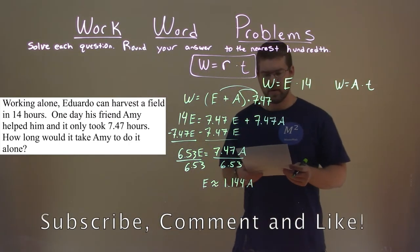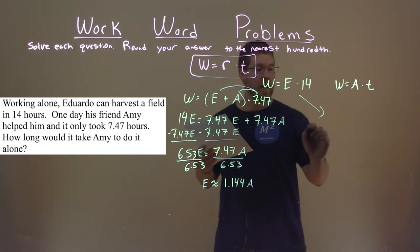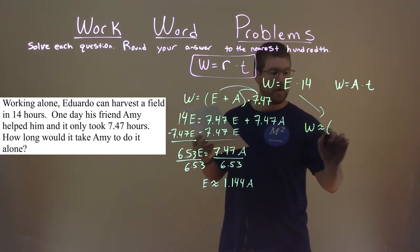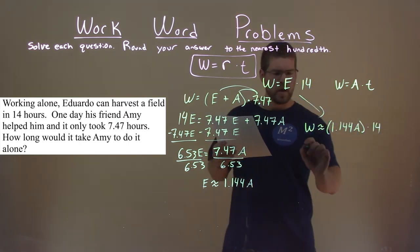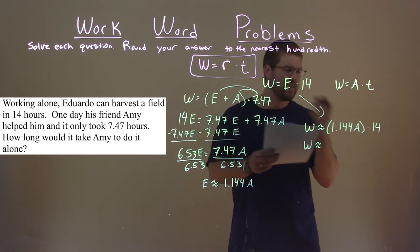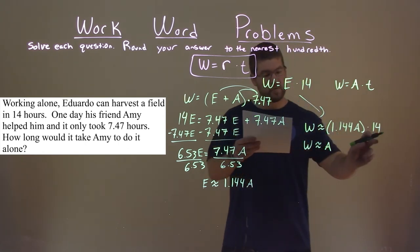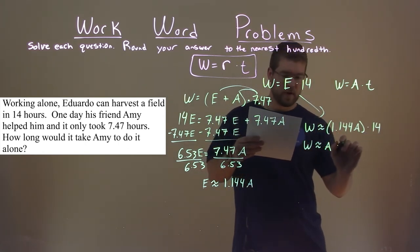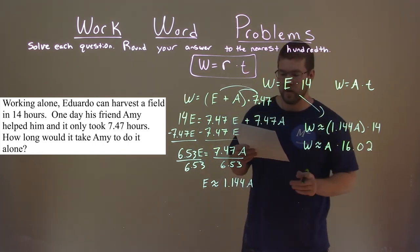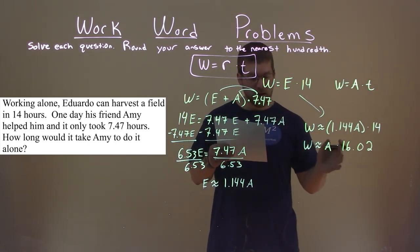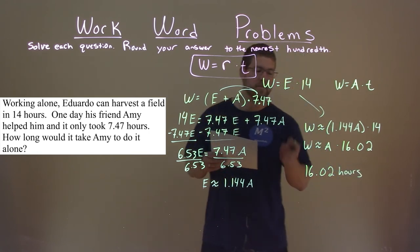So, how does that help us? Well, our formula for Eduardo here, we're going to take that E and replace it with 1.144A. So, the work here now is approximately 1.144A times 14. If we rearrange this formula, because it's all being multiplied, we can rearrange it. If we put A first and multiply 1.144 times 14, we get an answer of 16.02. And we can see how that lines up with our formula for Amy. So, Amy's time, we can see now, it would take her 16.02 hours to harvest the field.